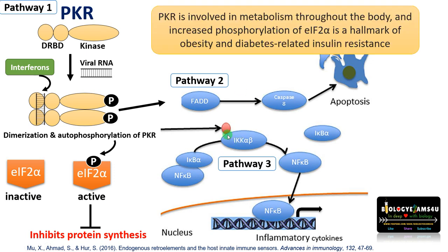PKR is also involved in metabolism throughout the body. Increased phosphorylation of EIF2α is a hallmark of obesity and diabetes-related insulin resistance. So a number of pathways are regulated and controlled by PKR. And that is it about PKR — thank you so much for your attention. Take care, stay blessed.